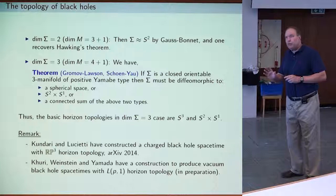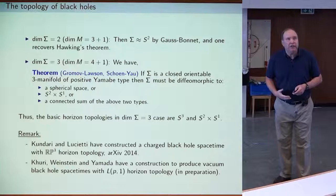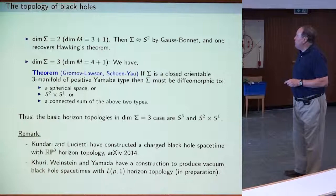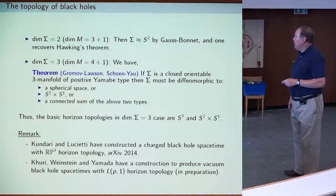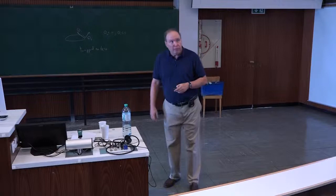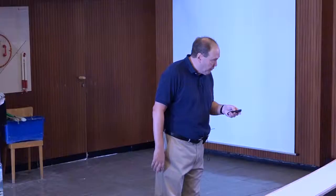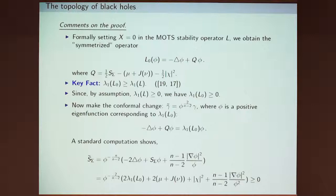With certain symmetry assumptions one can further reduce this list. The question is which of these topologies can actually be realized by black hole spacetimes. A few years ago, Kunduri and Lucietti constructed a charged supersymmetric black hole spacetime with RP3 horizon topology. More recently, Chrusciel, Weinstein, and Yamada have a construction to produce vacuum black hole spacetimes with certain lens space topologies. It's an interesting problem to determine a full classification of which topologies can be realized in higher dimensional black holes.